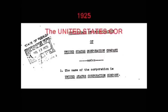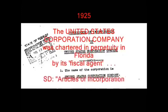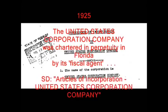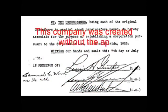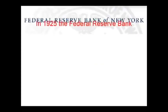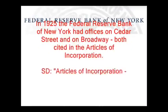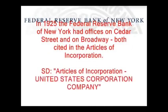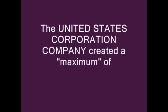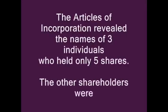1925: The United States Corporation Company was chartered in perpetuity in Florida by its fiscal agent. Source document: Articles of Incorporation, United States Corporation Company. This company was created without the approval of Congress, nor the knowledge and authority of the American people. Note: in 1925, the Federal Reserve Bank of New York had offices on Cedar Street and on Broadway, both cited in the Articles of Incorporation. The United States Corporation Company created a maximum of 100 shares of stock. The Articles of Incorporation revealed the names of three individuals who held only five shares; the other shareholders were not identified.